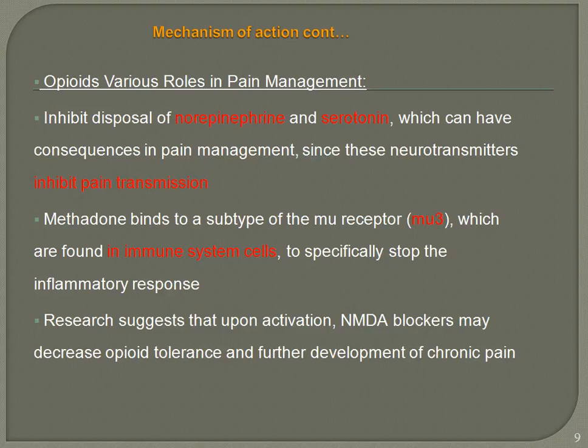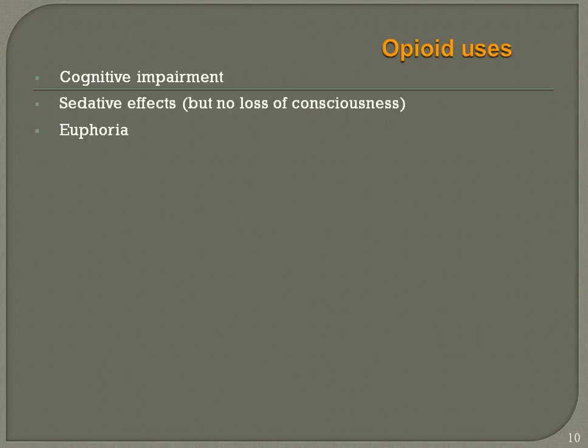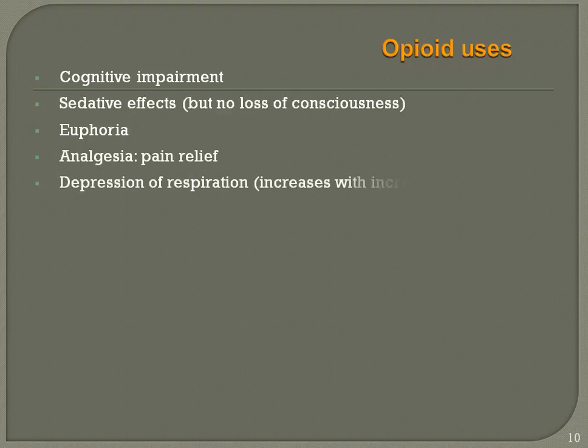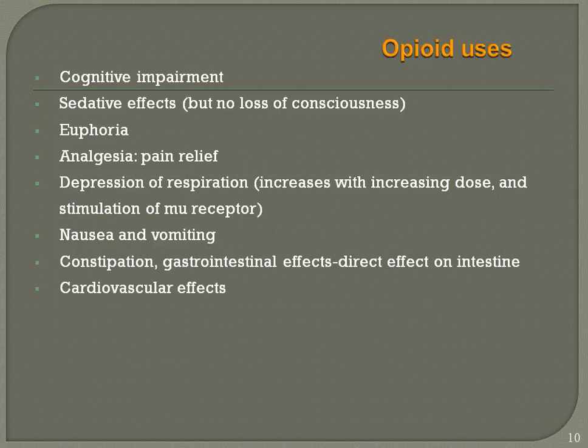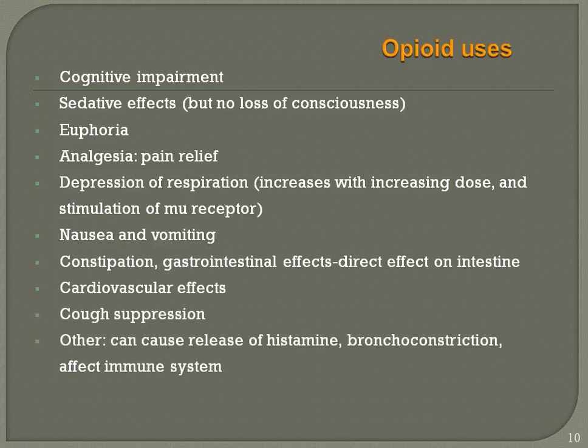The effects of opioid analgesics include: cognitive impairment, sedation without loss of consciousness, euphoria, analgesia, respiratory depression, nausea and vomiting, constipation, gastrointestinal effects, cardiovascular effects, cough suppression, as well as histamine release, bronchoconstriction, and effects on the immune system.